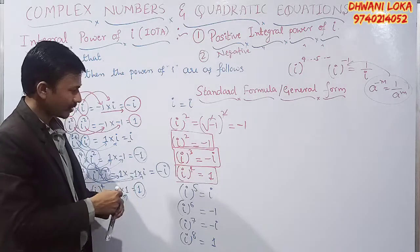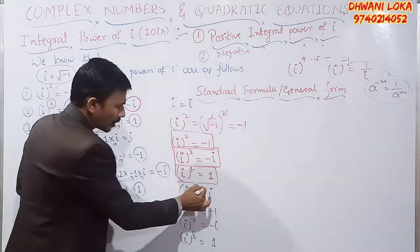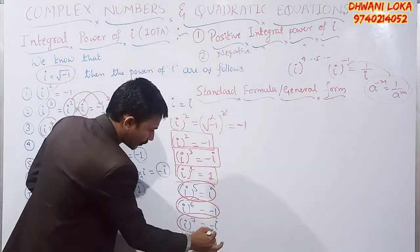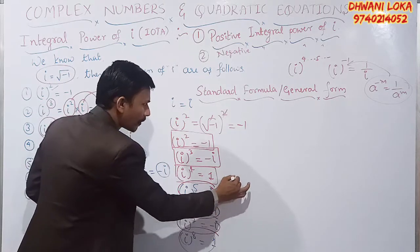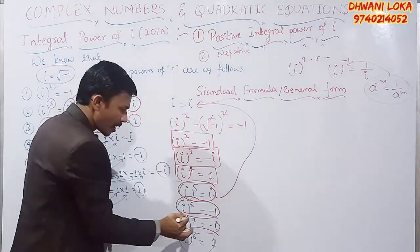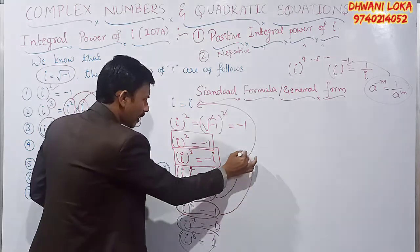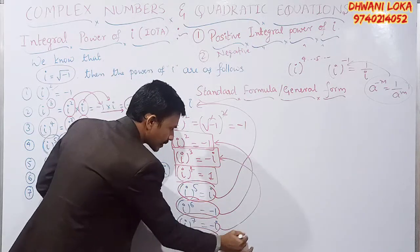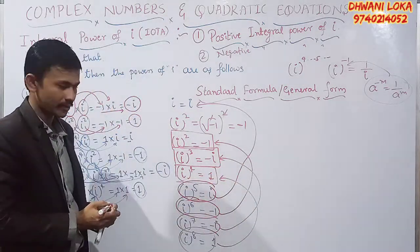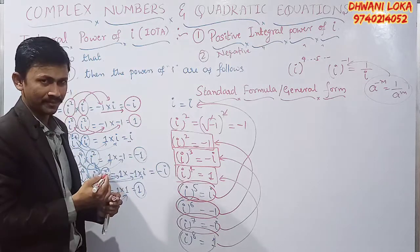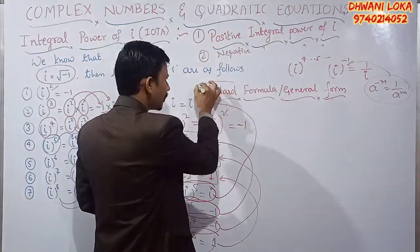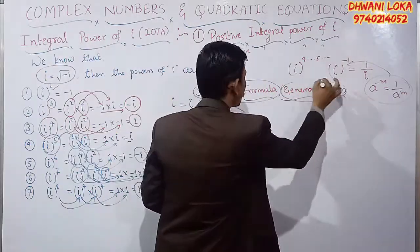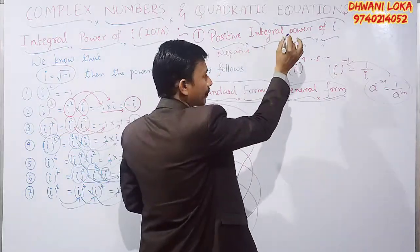You can relate this. i to the power 5 is i, just like i to the power 1. i to the power 6 is minus 1, just like i squared. i to the power 7 is minus i, just like i cubed. i to the power 8 is 1, just like i to the power 4. So there is a repeating pattern. We need to draw a conclusion — a standard formula or general form for the positive integral power of i.